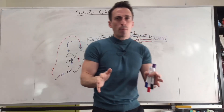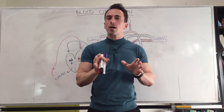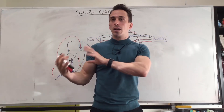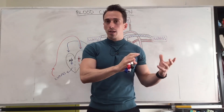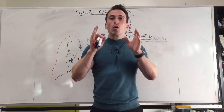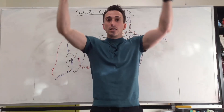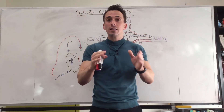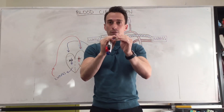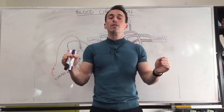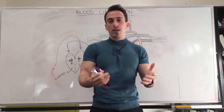So what are the take-home points? The right hand side of the heart deals with deoxygenated blood; the left hand side deals with oxygenated blood. Blood always enters the heart into the atria via veins, and always exits the heart from the ventricles via arteries. And that is blood flow.